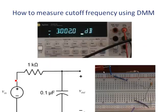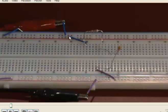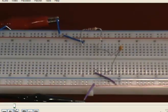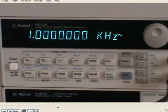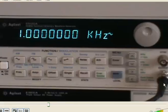So let's try to measure the cutoff frequency of the circuit. First, we need to build the circuit and connect the power supply to the circuit — the resistor, capacitor, and power supply. We are going to change the frequency of the power supply, so it doesn't matter what the initial value for the frequency is. We need to connect the output terminal of the function generator.